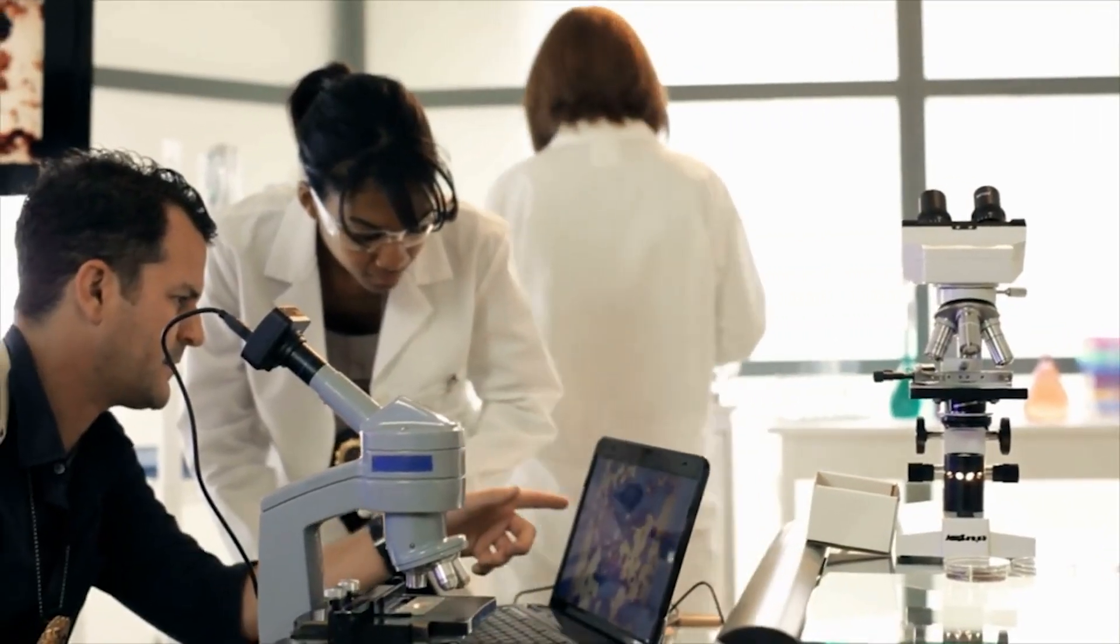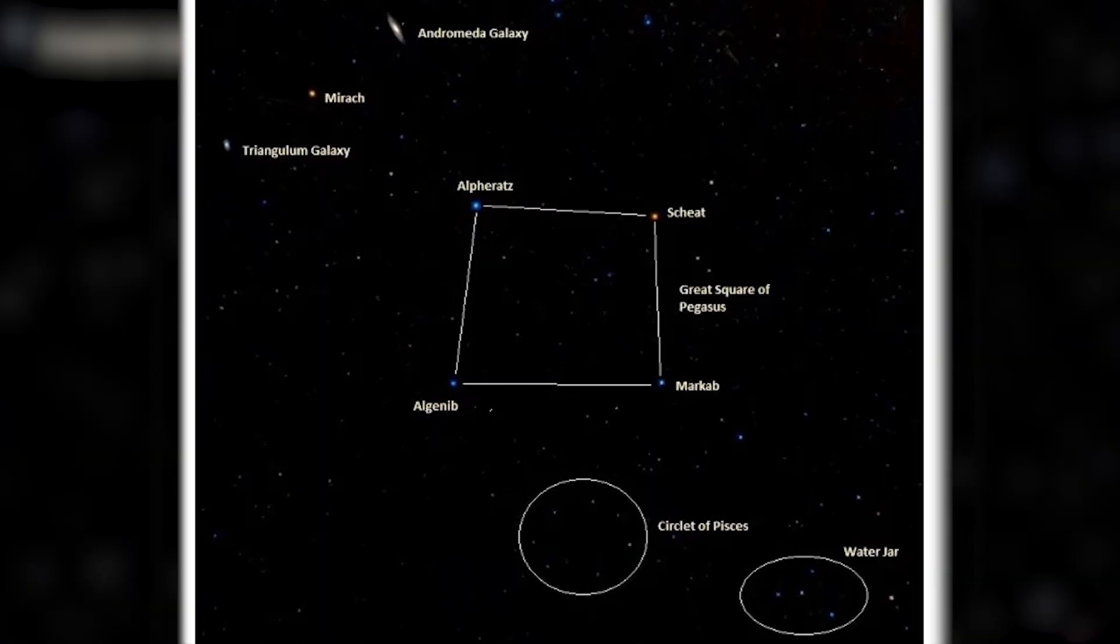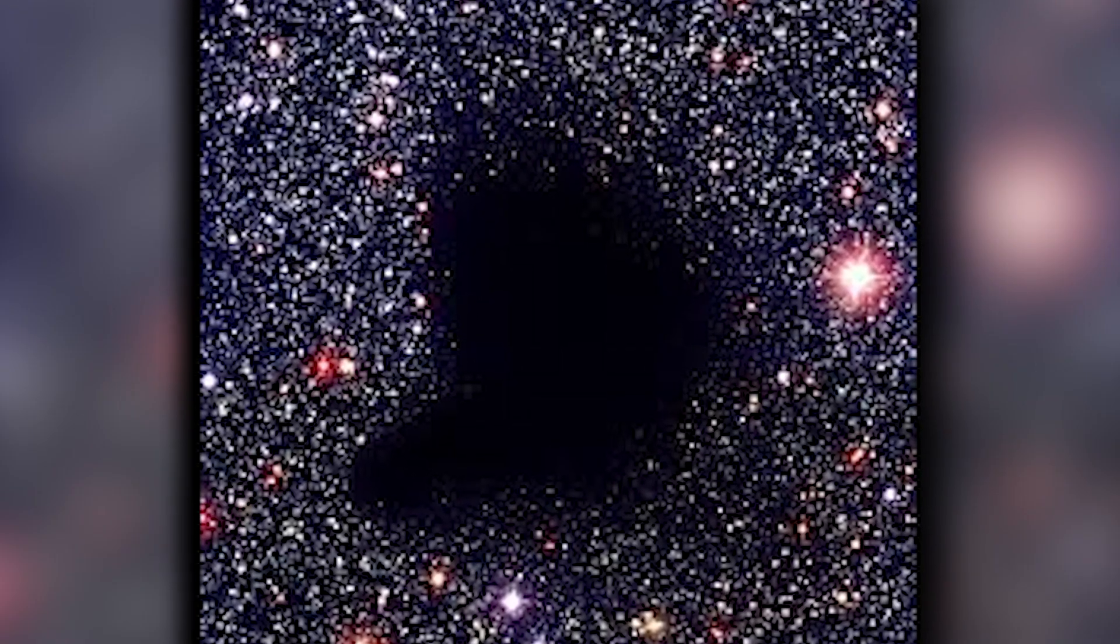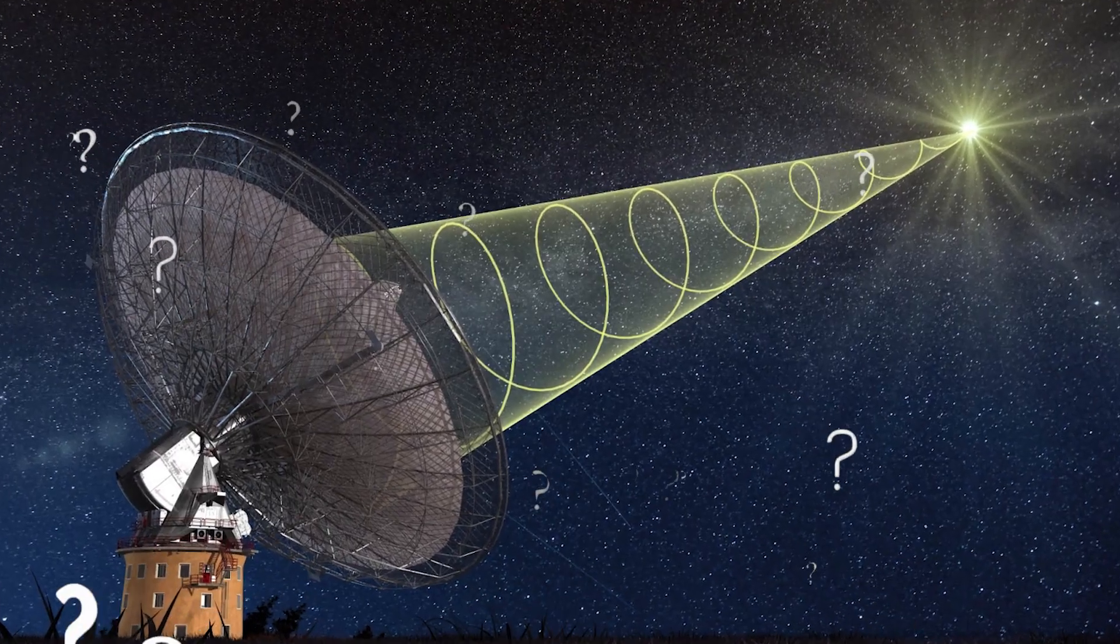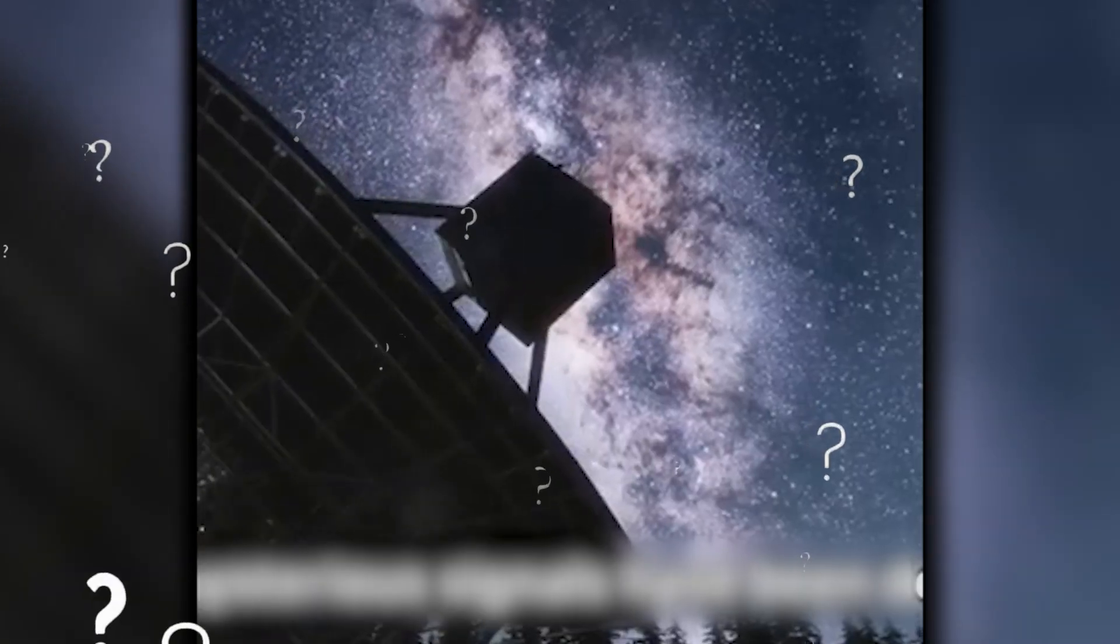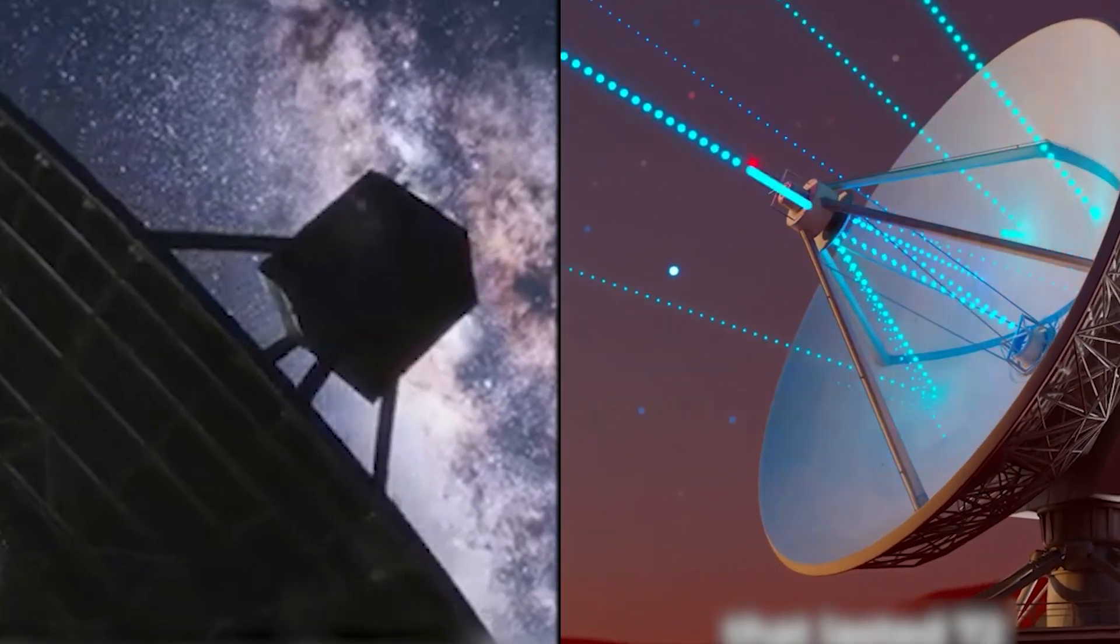What troubled researchers even more was its strange position, right between the constellations Pegasus and Pisces, because that part of the sky is totally empty, with no stars, no planets, just a whole lot of nothing. Could it be a message, signaling someone was out there but not where they came from? Or could it be just another call we can't explain? Two signals spaced out by decades. One was super loud, while the other was barely a whisper. And honestly, both are still a mystery.